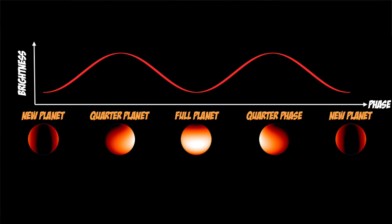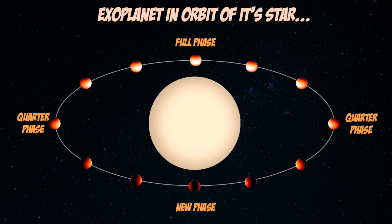Briefly, a phase curve is the amount of light we see coming from an exoplanet that changes throughout its orbit due to our viewing geometry and the motion around its star. This is similar to how the amount of light reflected off the moon appears to change throughout the month — in other words, when we see it going through its phases. Phase curve.